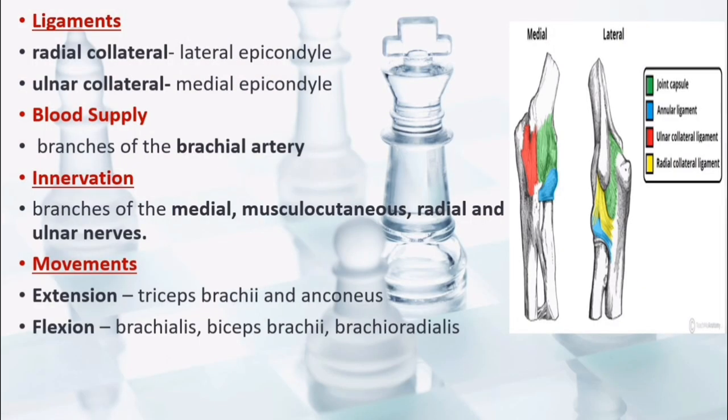The joint capsule of the elbow is strengthened by ligaments medially and laterally. The radial collateral ligament is on the lateral side, extending from the lateral epicondyle and blending with the annular ligament of the radius from the proximal radio ulnar joint. The ulnar collateral ligament originates from the medial epicondyle and attaches to the coronoid process and olecranon of the ulna. The elbow joint receives a rich arterial supply from a surrounding network of vessels formed by branches of the brachial artery. It is innervated by branches of the medial, musculocutaneous, radial and ulnar nerves.